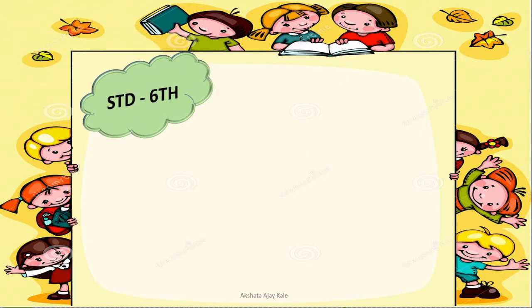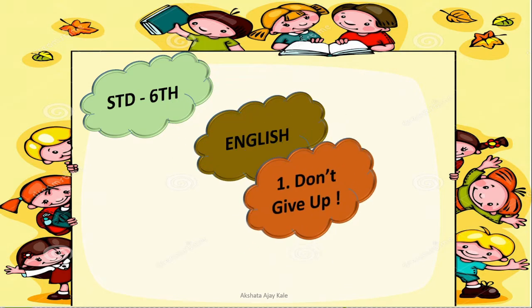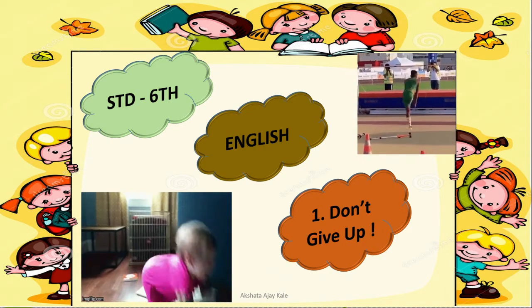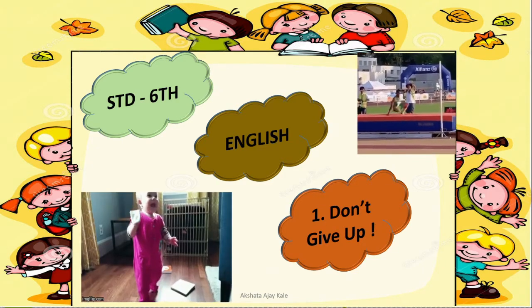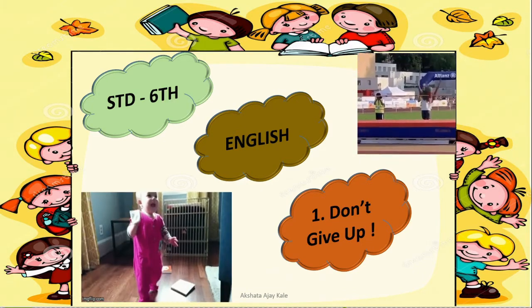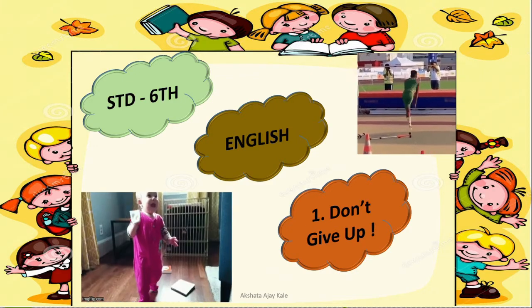Welcome to Standard 6th. Dear children, let us learn an English poem today. The name of this poem is Don't Give Up. Here, 'don't' is a contracted form of 'do not', means do not give up. Here you can see two pictures: a baby trying to walk, and a man who has a single leg trying to jump.